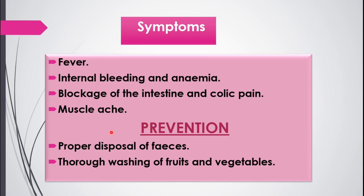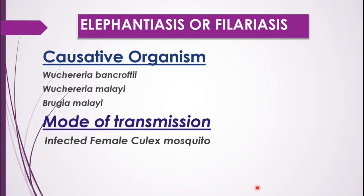Prevention includes proper disposal of feces, as open defecation can spread the disease. The second preventive method is thorough washing of fruits and vegetables, since eggs of the worm may remain within tubers, carrots, and potatoes. If such fruits and vegetables are thoroughly washed and cooked, there is no chance of the disease spreading to a new host.